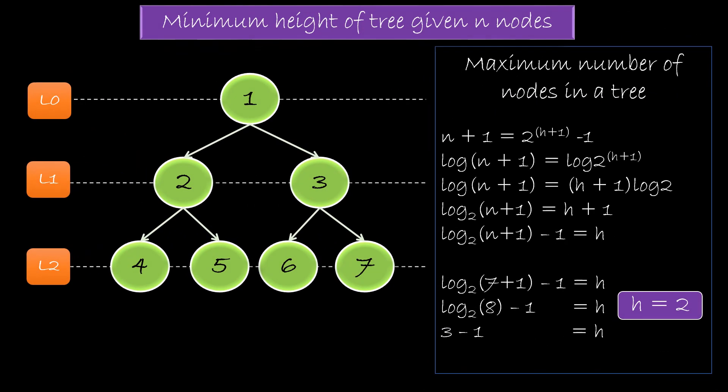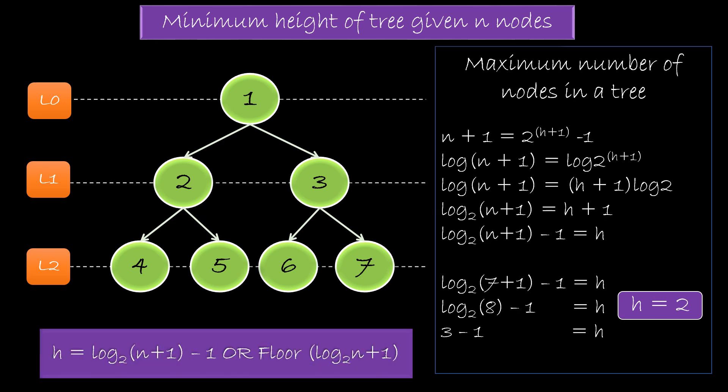What if I ask you to calculate the height of a tree given the number of nodes? Well, if it is a full or perfect binary tree, we can use the previous equation to derive the formula. The minimum height that a tree can have given n nodes is given by log base 2 of (n+1) minus 1. If we try to find the height given 7 nodes, we get a tree with 2 levels or height 2 using the derived formula. The formula can also be rewritten as floor of log base 2 of (n+1).